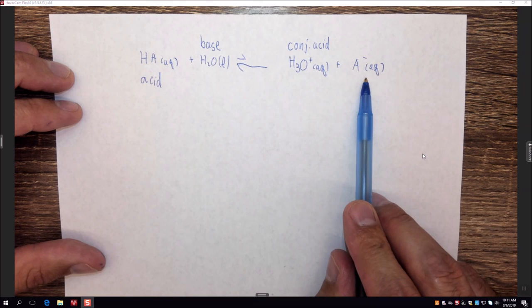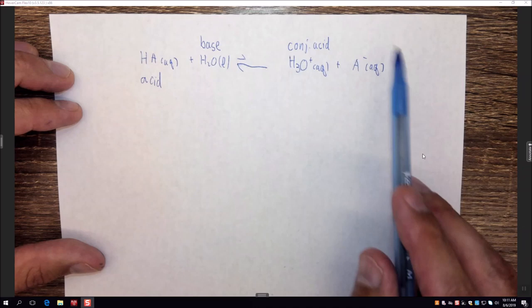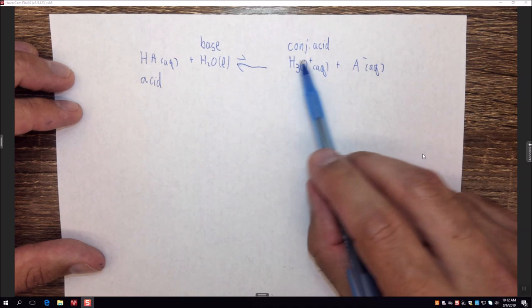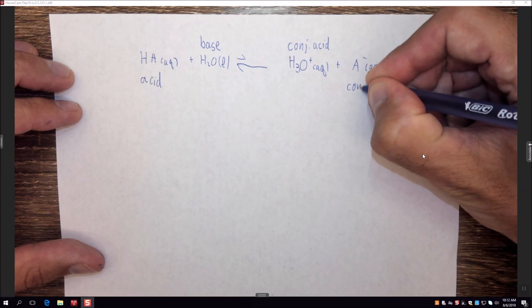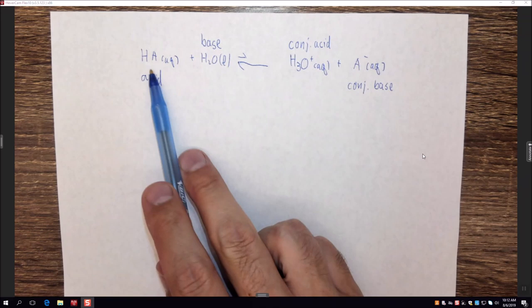A- is HA without a proton — you lose H and the plus charge, so HA becomes A-. This now wants to pick up a proton, specifically from H3O+, so it acts as a base. This is your conjugate base. This works for generic weak acid HA.